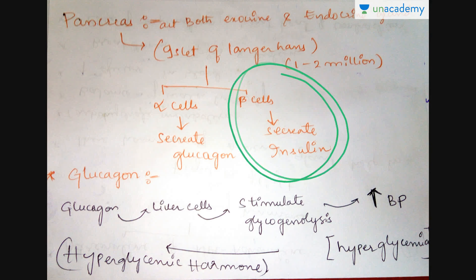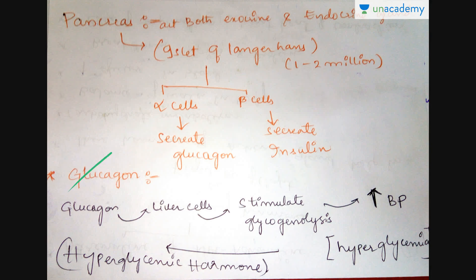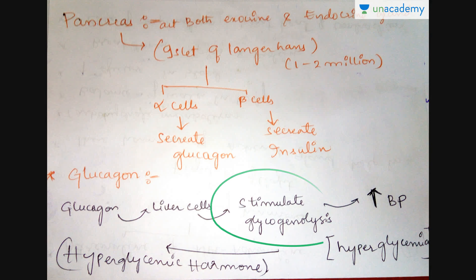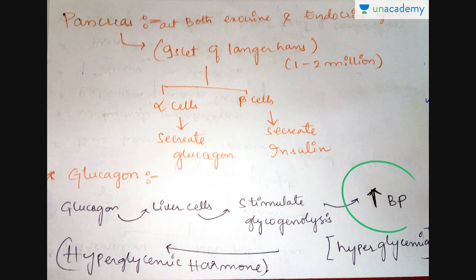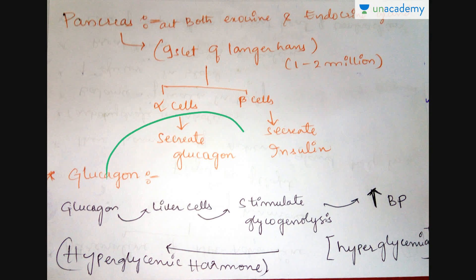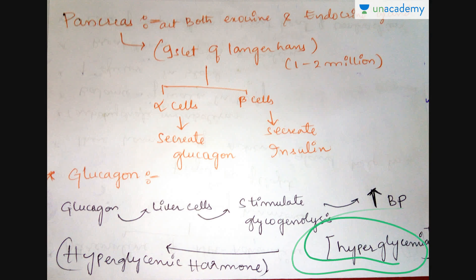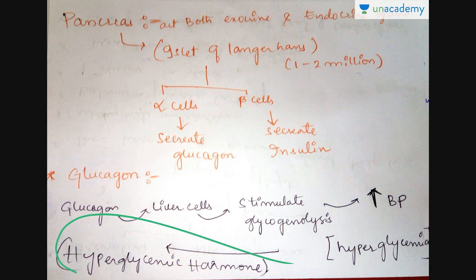So why is glucagon important to our body? Glucagon is taken up by the liver cells and stimulates glycogenolysis, a process which leads to an increase in blood glucose levels. If glucagon levels are high, it leads to a condition called hyperglycemia. Hence glucagon is called a hyperglycemic hormone.